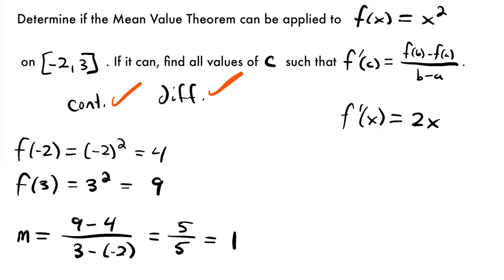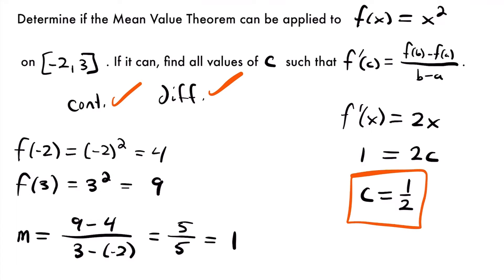So the slope is just 1 here. What we do now is we want to solve for the values of c on this function where the derivative is equal to that slope between these two points. We'll set the derivative equal to that slope of 1, change our variable x to c, and then solve for it. We have a pretty easy equation to solve — we'll just divide both sides by 2, and we'll find that c is equal to 1 half. That is the only value of c on this interval where the slope is the same as the slope between the two endpoints.